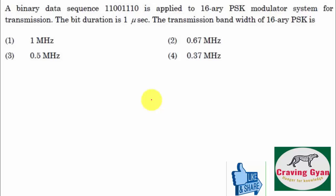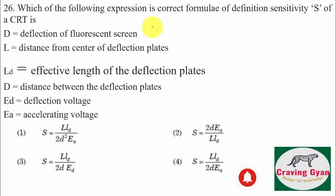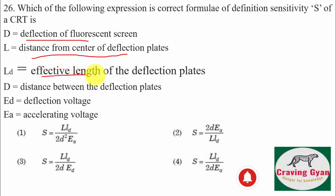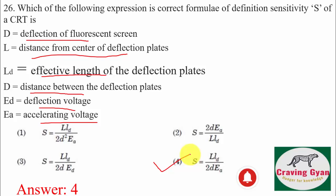Twenty-fifth question: a binary data sequence 11001110 is applied to a 16-ary PSK modulator; bit duration is 1 microsecond — find the transmission bandwidth of 16-ary PSK. Problems will be covered in a later part of the video; option number 3 is correct. Twenty-sixth question: the correct formula for the sensitivity of a CRT, where D is deflection of the fluorescent screen, L is distance from center of deflection plate, LD is effective length of deflection plate, d is distance between deflection plates, and ED is deflection voltage, is sensitivity = L·LD / (2·d·EA). Hence option number 4 is correct.